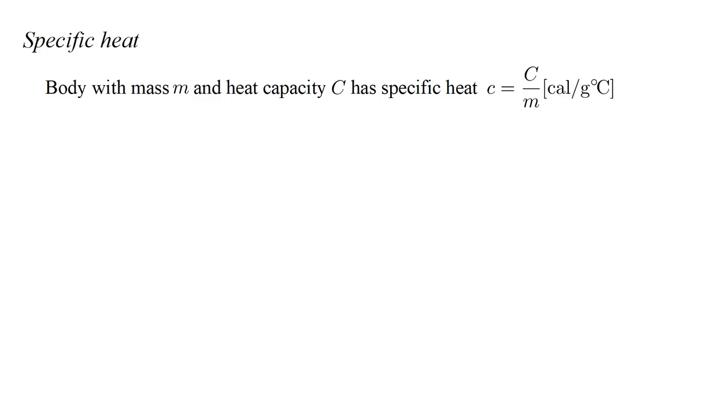A body with mass m and heat capacity C has specific heat, denoted by lower case c, equal to the heat capacity divided by the mass. The units are calories per gram degree Celsius. For a particular object, the heat capacity is its mass times the specific heat of the material it's made of.